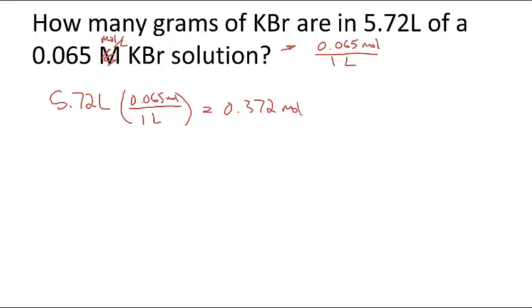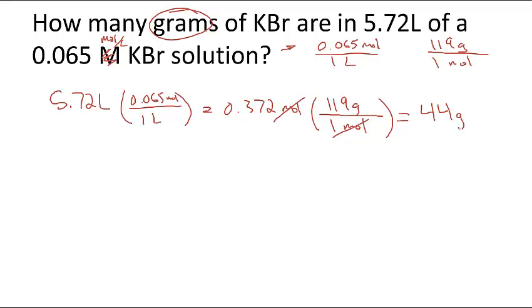Now that I have moles, it doesn't want moles, it wants grams. Something many of you did well in the last quiz was you were able to go from grams to moles very easily. I need another conversion factor. I know that 1 mole of KBr from the periodic table, adding up the molar masses, is 119 grams. I have less than 1 mole, I have 0.372 moles, so I know that has to be less than 119. Doing the unit cancellation method, I get 0.372 times 119, and I get 44 grams of KBr.